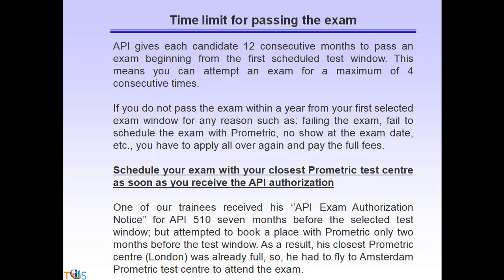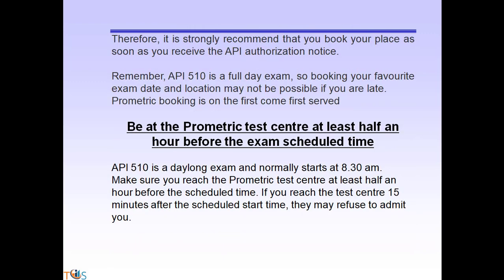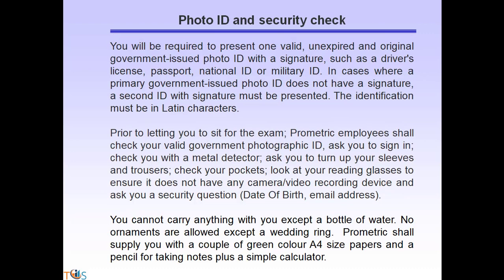It is strongly recommended to book your place as soon as you receive the API authorization notice. API 510 is a full-day exam, so booking your preferred date and location may not be possible if you are late — Prometric booking is on a first-come, first-served basis. Be at the Prometric test center at least half an hour before the scheduled exam time. API 510 normally starts at 8:30 a.m. If you arrive 15 minutes after the scheduled start time, they may refuse to admit you.